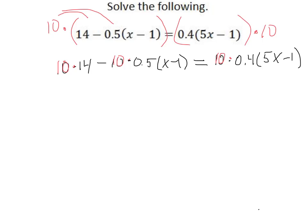Now, let's see what we have. 10 times 14 is 140 minus 10 times 0.5 is 5. That's why we're multiplying by 10 to clear fractions. In this case, to clear decimals, which are fractions. And on the right, 10 times 0.4 is 4. Okay, we now no longer have any decimals.